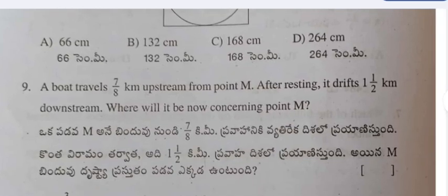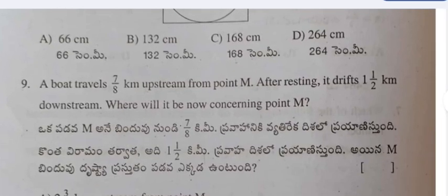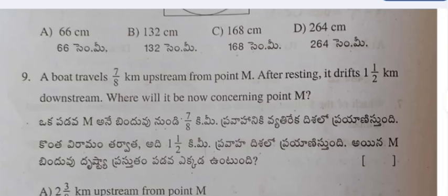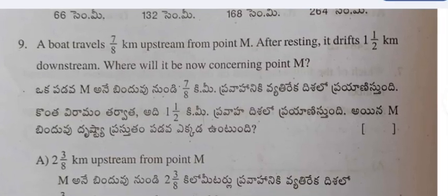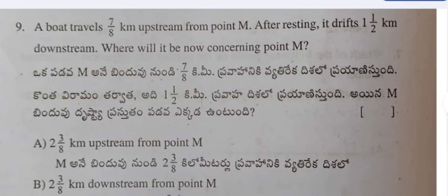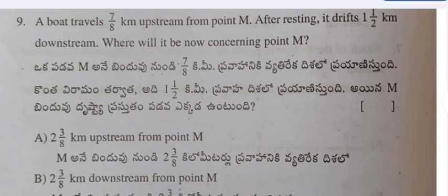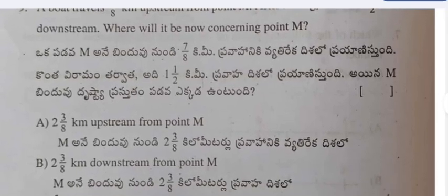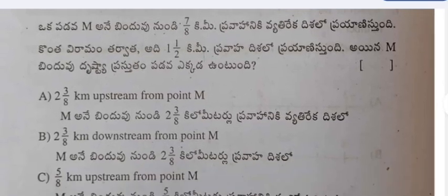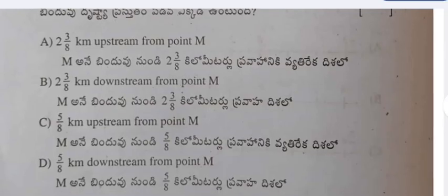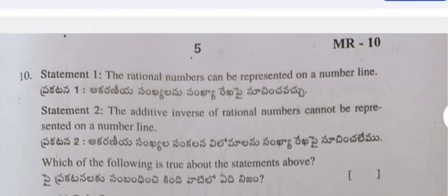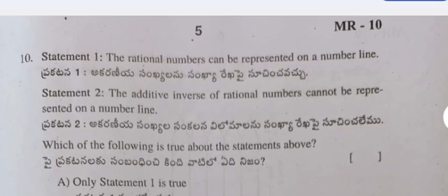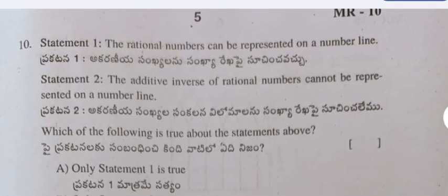Question 9: A boat travels 7 by 8 kilometer upstream from point M. After resting, it drifts 1 and 1 by 2 kilometers downstream. Where will it be now concerning point M? Options A, B, C, D are given; the correct one can be selected. Answers are given at the end of this question paper.